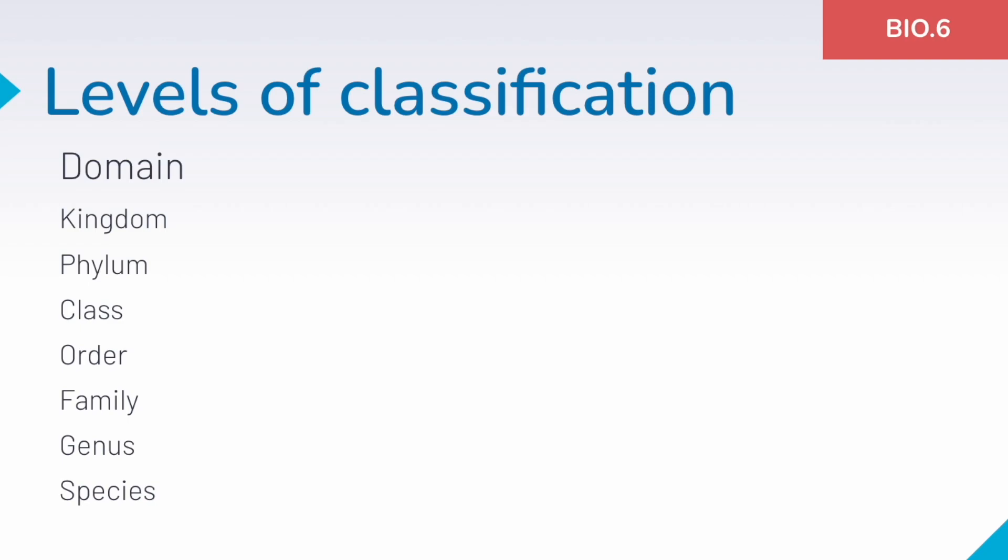These levels of classification are the different categories that we organize organisms into and different species may have slightly different levels of classification depending on what you're looking at. Some plants don't go exactly with all of these levels and sub-levels, but domain is the largest and then it goes kingdom, phylum, class, order, family, genus, and species. This is the typical categorization for all living things.